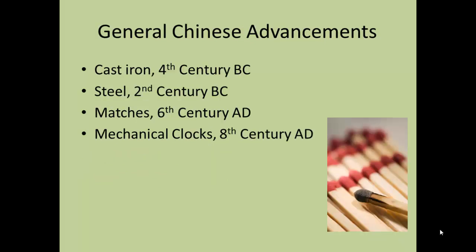The Chinese have had several advancements over the years compared to others. Some of their non-exploration-related ones include cast iron, developed in the 4th century B.C.; steel in the 2nd century B.C.; matches in the 6th century A.D.; and mechanical clocks in the 8th century A.D. These are all inventions that the Chinese had for centuries before anyone had such things in Europe or the rest of the world.